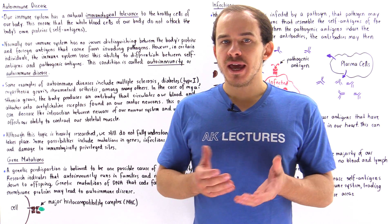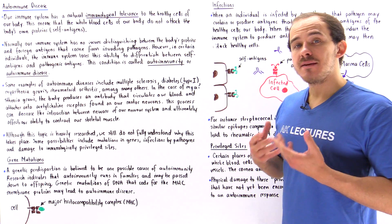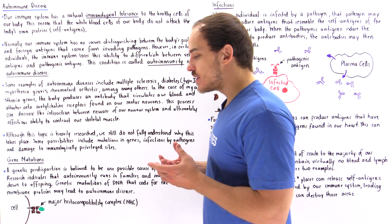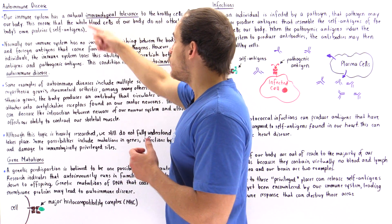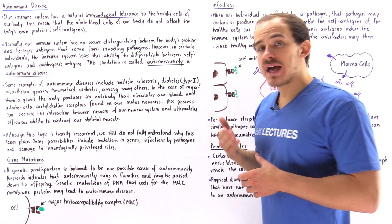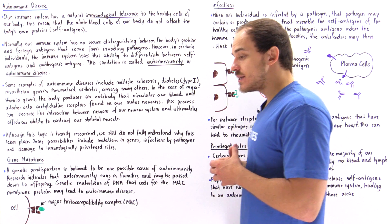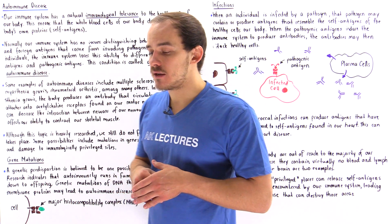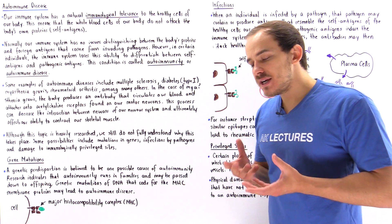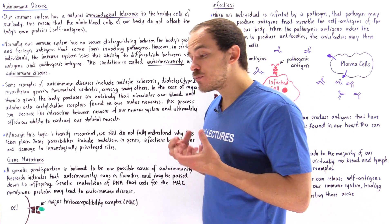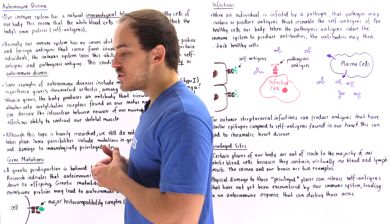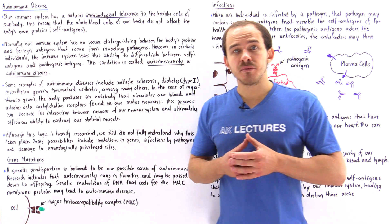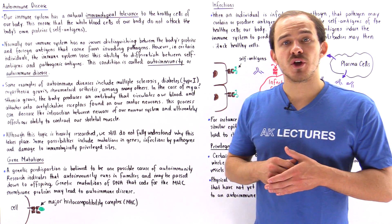Our immune system displays something known as immunological tolerance. Our white blood cells are naturally immunologically tolerant to the healthy cells of our body. These white blood cells will not attack the healthy cells of our body because our healthy cells produce proteins called self-antigens, and they display these self-antigens on special protein complexes found on the membrane of those healthy cells.